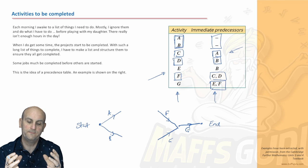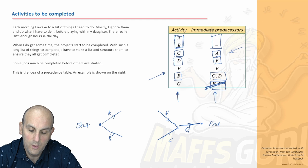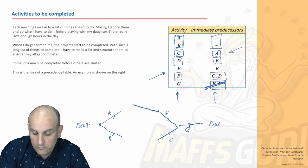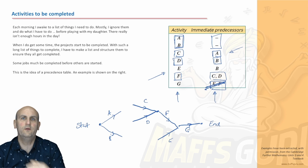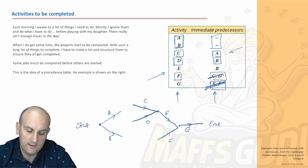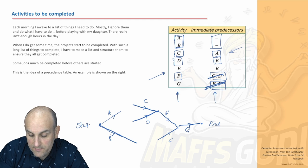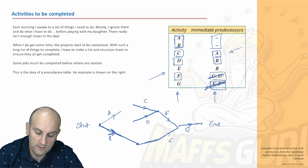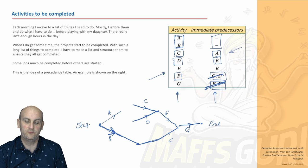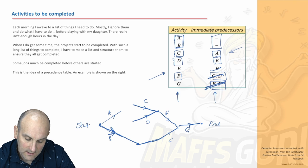F can only start when C and D have finished, so I draw two lines coming into the start of F — one for C and one for D. E can only start when B has finished, so I extend my B line and connect it to E. D can only start when B has finished, so I connect the end of B to the start of D, making sure my arrow is pointing the right way.